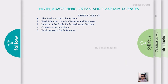For the syllabus in Earth Sciences, topics covering Earth science, atmospheric science, oceanography, and planetary science come together under a single heading. For Part B, there are five headings: Earth and Solar System, Earth Materials, Surface Features and Processes, Interior of the Earth, Deformation and Tectonics, Ocean and Atmosphere, and Environmental Earth Sciences. Geology students may already have the top three in their PG syllabus, and oceanography may also be covered. The atmosphere topic is relatively new, but with preparation they can cover it and score up to 70 marks in this section.